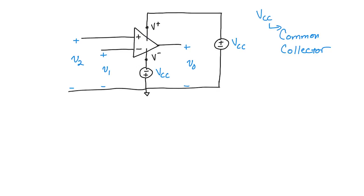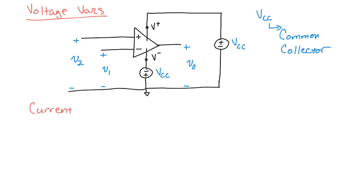We're writing down these reference voltage directions because in a few minutes we'll be hooking up resistors to all of these components. You need to know that V0 goes from here to here and V1 goes from here to here, because you might be writing a Kirchhoff's voltage law equation going all the way around the circuit. You need to know your reference directions — that's why we're taking the time. These are called the voltage variables. Now we also want to understand and write down the current variables.